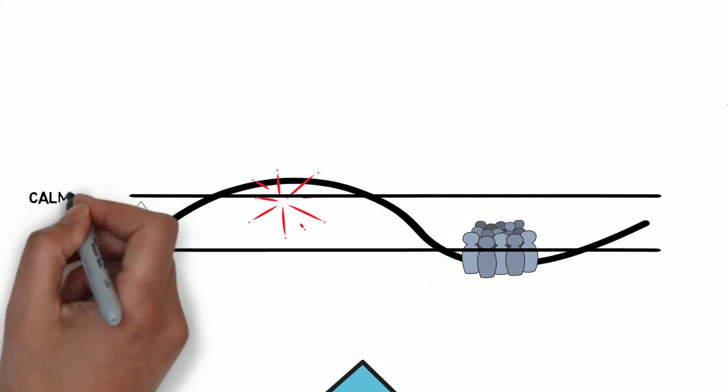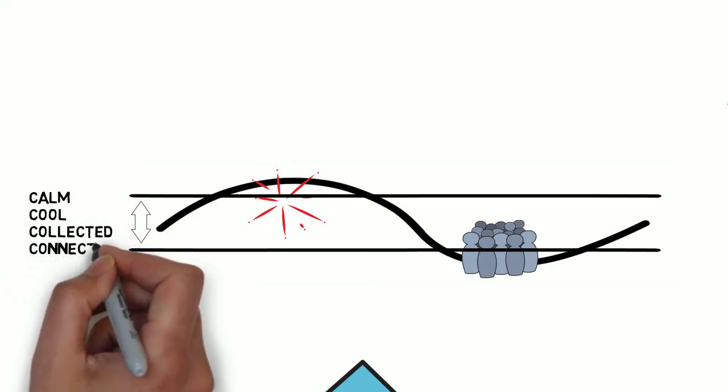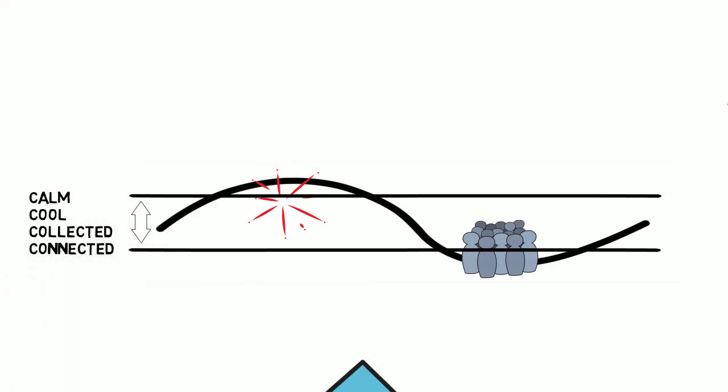As we talked about, this is where people can feel like they can manage their emotions in ways that are calm, cool, collected, and connected. Maybe things that used to be easy to handle, like a loud noise or large groups of people, don't feel as manageable anymore.